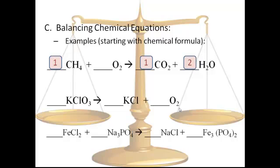Now you're left with the oxygens, which almost always ends up being the trickiest. There are two on the left, and over on the right, oxygen shows up twice: two O's in carbon dioxide and two O's in water, so four O's total on the right side. To get four O's on the left, we double the O2, making it four. Double-check: one C on both sides, four H's on both sides, and four O's on both sides. We are all set.